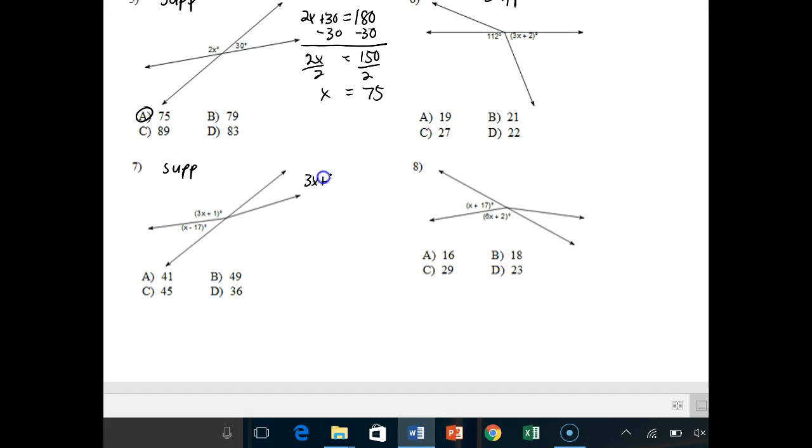Number seven, I have a supplementary relationship. So I'll have 3x plus 1 plus x minus 17 has to add up to 180 degrees. 3x and x will give me 4x. 1 and negative 17 will give me plus negative 16 equals 180. I'll add 16 to both sides. I'll get 4x is equal to 196. I'll then divide by 4 and x will give me 49.